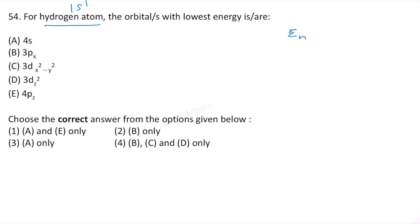En equals minus 13.6 times Z squared divided by n squared eV. Z is the atomic number; for hydrogen atom it is equal to 1, and n is the value of the principal quantum number. This means that the energies of the atomic orbitals of hydrogen atom depends only on the value of the principal quantum number.